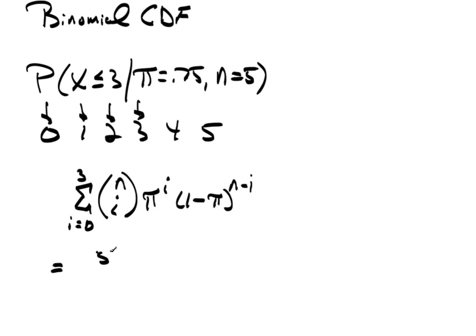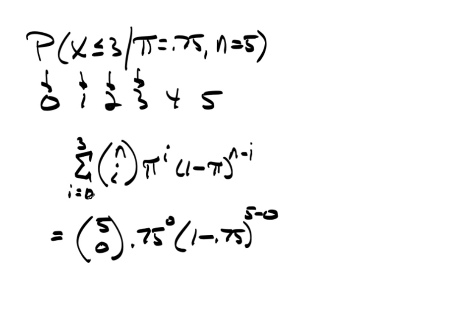So, when I is 0, this would be 5, choose 0, times pi, 0.75, to the 0, times 1 minus 0.75, raised to the 5 minus 0. Now, I notice no successes means they're all failures, and that's exactly what I have. This is a probability of failure. 0.75 to the 0 is simply 1, and then this is going to be 0.25 raised to the 5th.